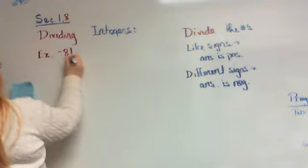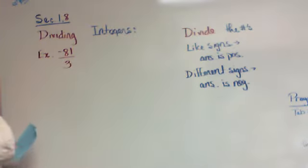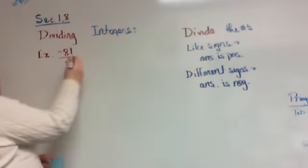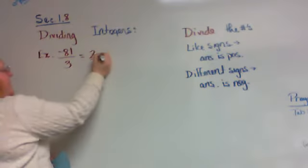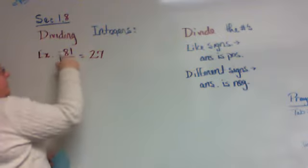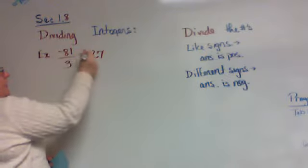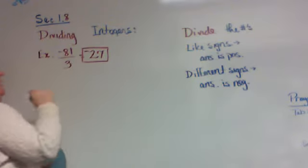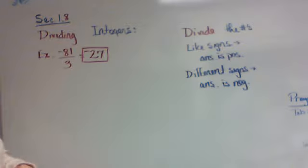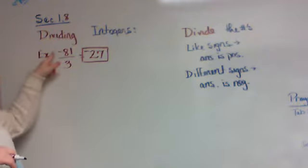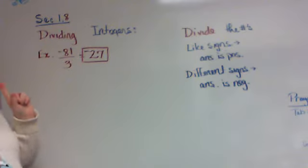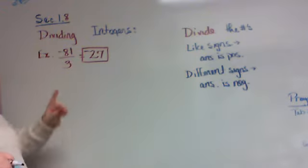Let's look at a couple of examples. Negative 81 divided by 3. Because the fraction bar is just like division, 3 goes into 81 27 times. Different signs means our answer must be negative, so it's a negative 27. Didn't matter which one was on top or on bottom because there was only one negative. That means our answer is going to be negative.